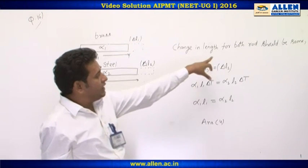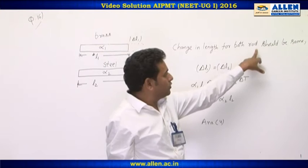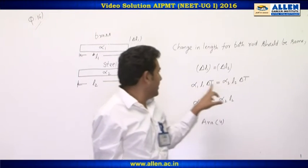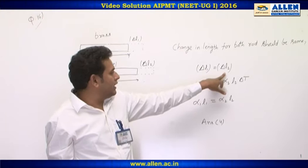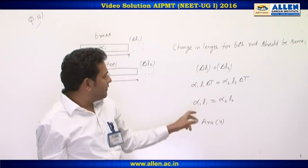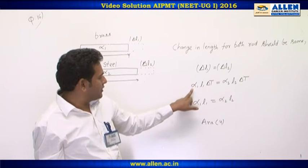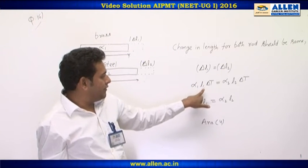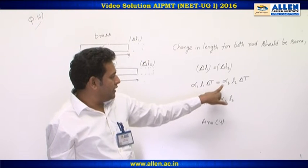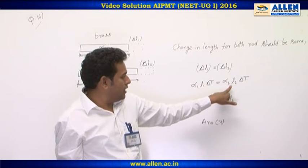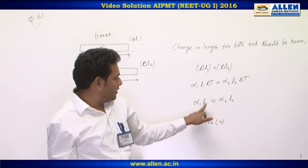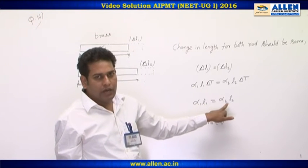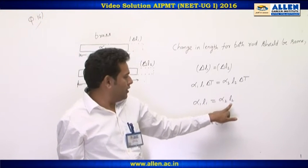So, the change in length for both rods should be the same: delta L1 equal to delta L2. This gives alpha1 × L1 × deltaT equal to alpha2 × L2 × deltaT, which simplifies to alpha1 L1 equal to alpha2 L2.